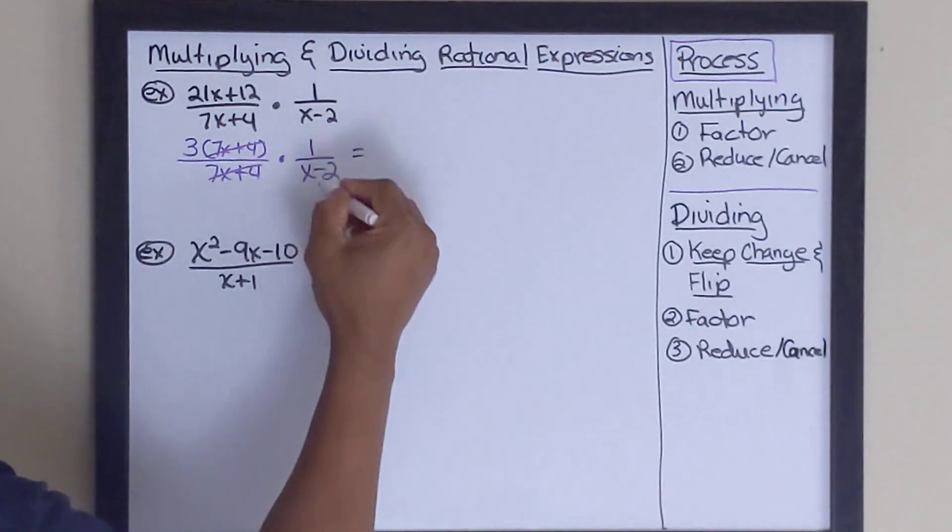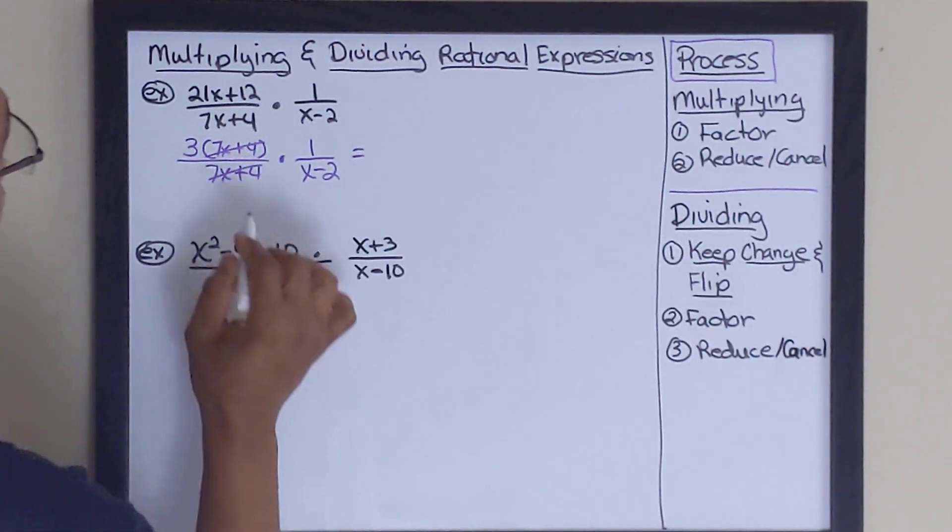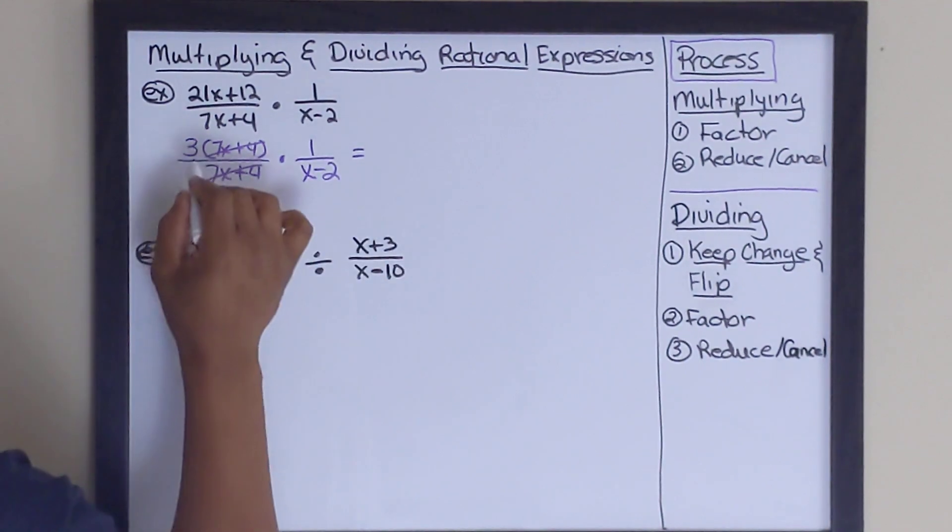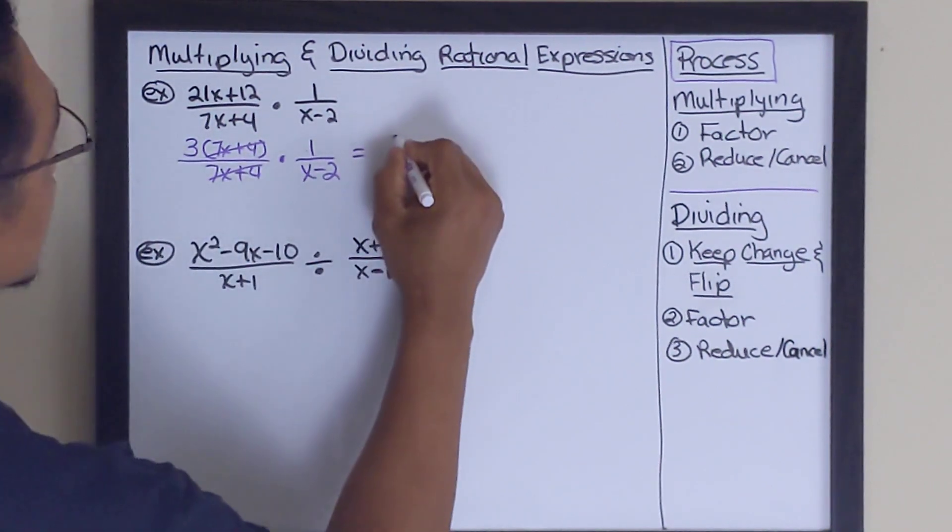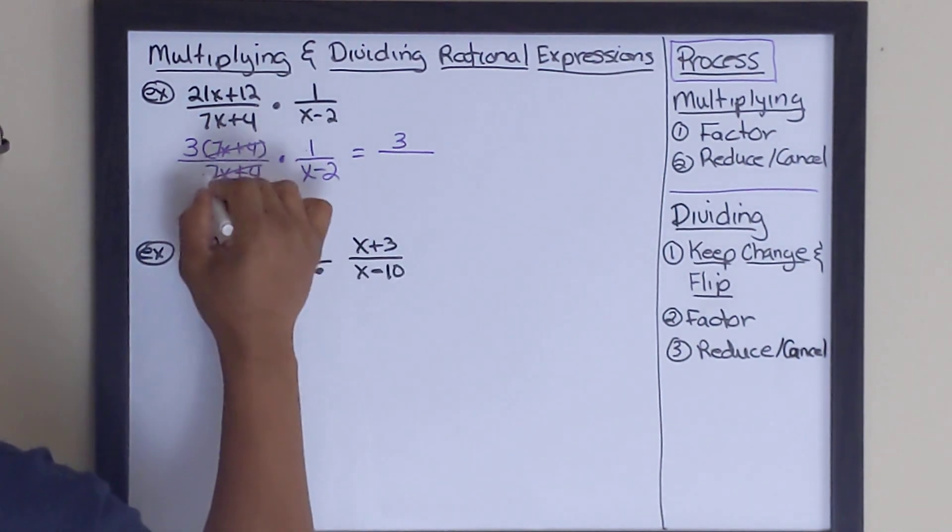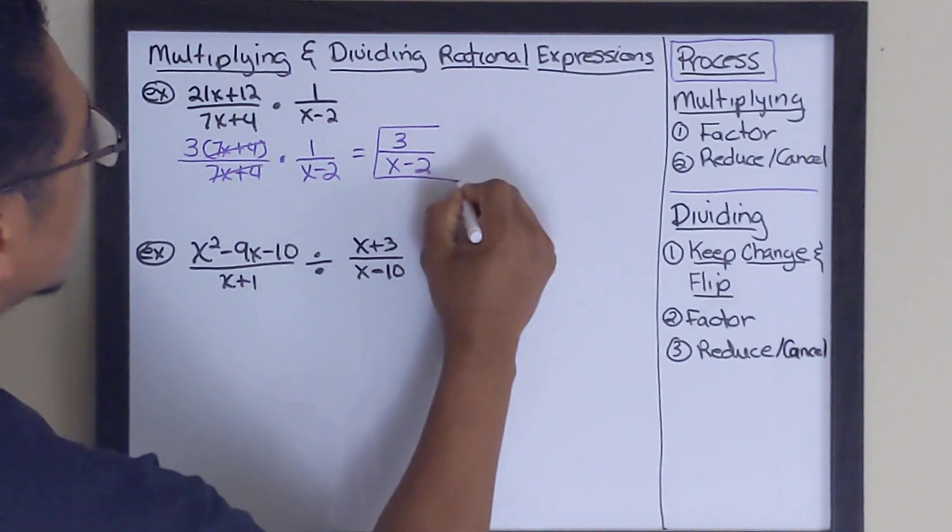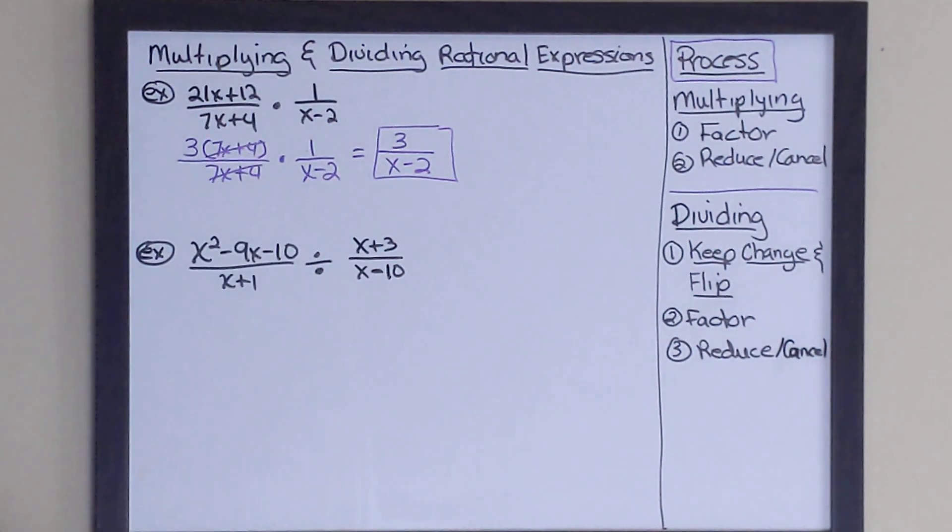There's nothing else that can cancel between the numerator and the denominator on either side. So that'll be it. Now we're going to multiply whatever we have left. 3 times 1, which is just 3, all over. In this case, this is 1 times x minus 2, which is just x minus 2. So this is our answer for our multiplication example.